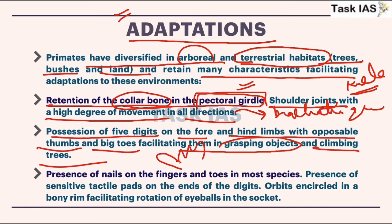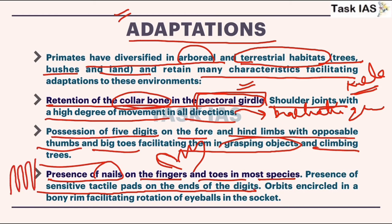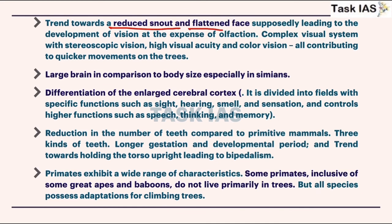Presence of nails on fingers and toes in most species. Presence of sensitive tactile pads on the ends of the digits — at the tip of our fingers there are features which are more sensitive with more sensory organs present. These digits help in better grasping and observation of the environment. Orbits and eyes are present in some kind of bony circuit which helps in protection of the eyes.